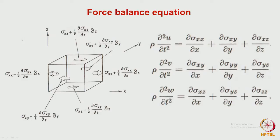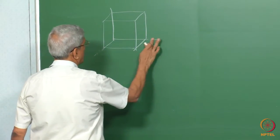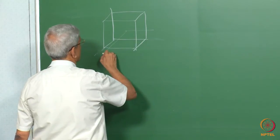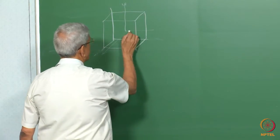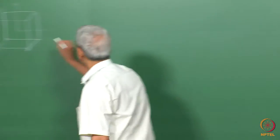To recap the force balance equation: we consider an infinitesimal cube where stress varies as a function of position. We represent this variation as a derivative — for sigma_xx, the derivative is d(sigma_xx)/dx. For a small cube, the center of the axis system is taken with respect to the cube, and half the distance gives the stress on each face.